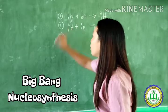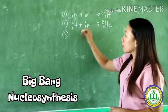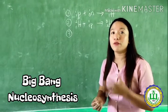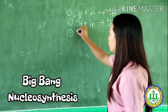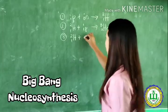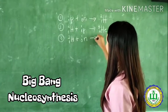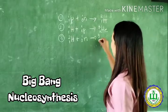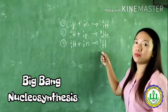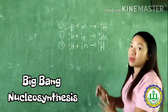Reaction three: deuterium fuses with neutrons to produce tritium. So ²₁H + ¹₀n → ³₁H. When deuterium and a neutron collide, tritium is being produced.